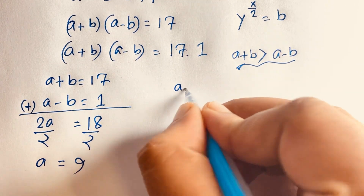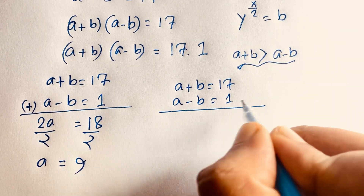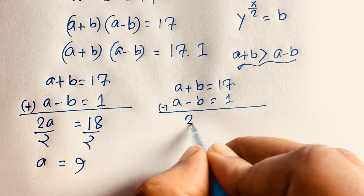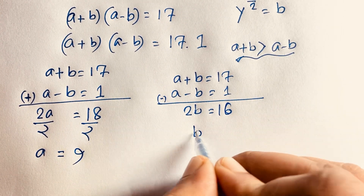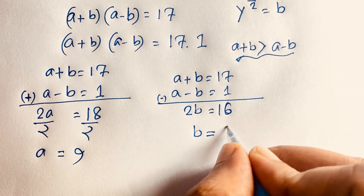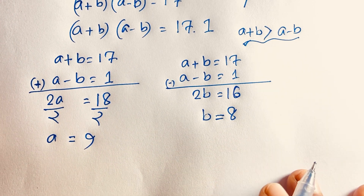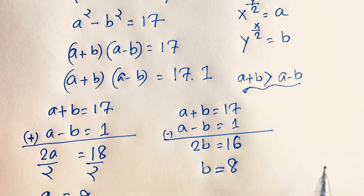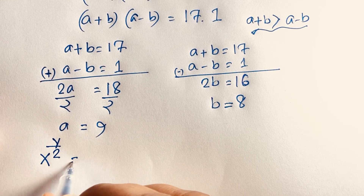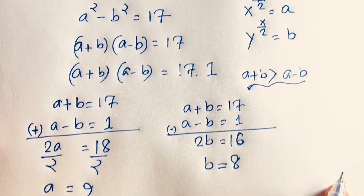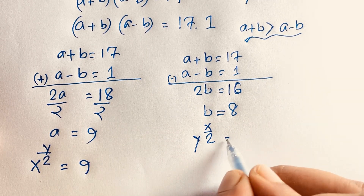If I subtract the two equations — a plus b equals 17 minus a minus b equals 1 — the a terms cancel and I get 2b is equal to 16. Dividing both sides by 2, b is equal to 8. So we have b equal to 8 and a equal to 9. Recalling our substitution, a equals x to the power y over 2, so x to the power y over 2 is equal to 9. And b equals y to the power x over 2, so y to the power x over 2 is equal to 8.